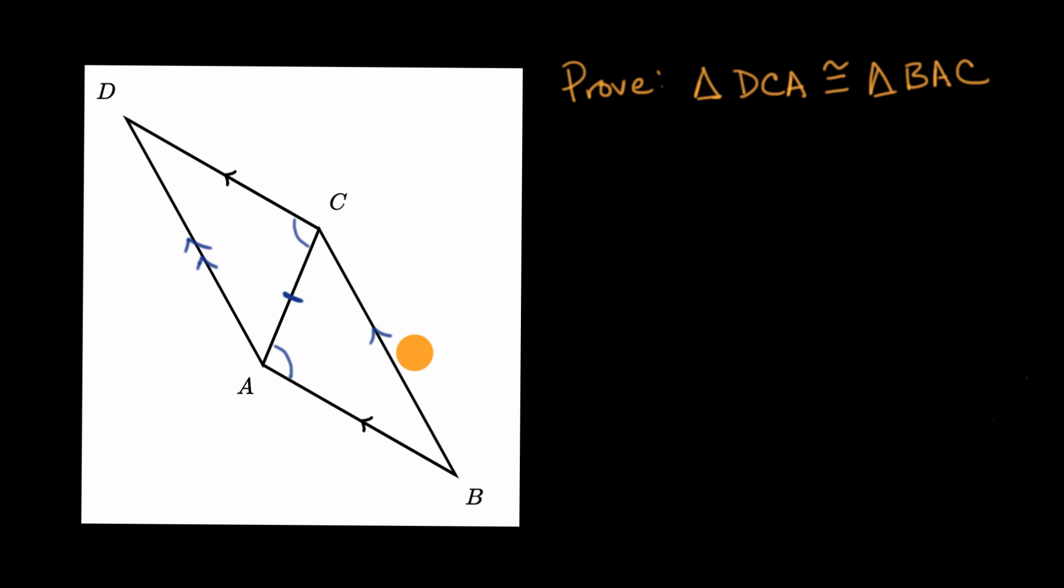But it turns out, given the information that we have, we can't just assume that because something looks parallel, or because something looks congruent, that they are. And so based on just the information given, we actually can't prove congruency.